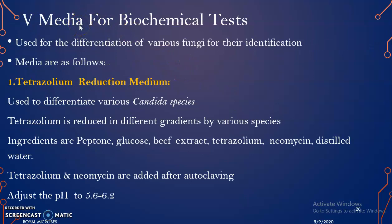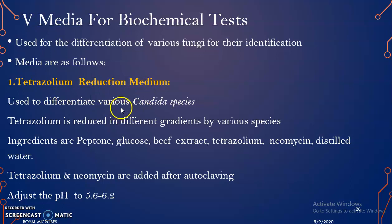Now we can see the fifth category: media for biochemical reactions. These media are used for the differentiation of various fungal pathogens for their identification. The first is tetrazolium reduction medium, mainly used for differentiating various Candida species. Tetrazolium is reduced by various Candida species in different gradients. The ingredients are peptone, glucose, beef extract, tetrazolium, neomycin, and distilled water. Tetrazolium and neomycin are added only after autoclaving, and the pH is 5.6 to 6.2.